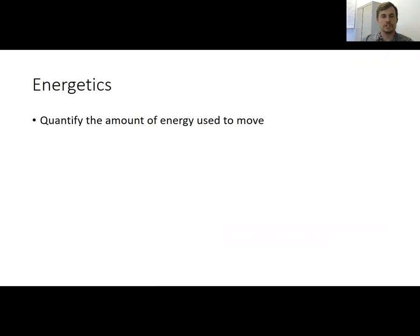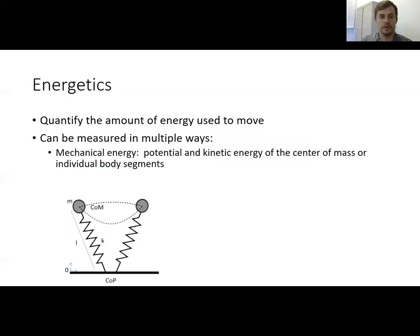So what do we mean by gait energetics? In energetic studies, we simply quantify the amount of energy that we use to move. This can be measured in multiple ways. First, we can measure the mechanical energy that someone is producing to move. This is where we often model the body as something very simple, like a spring with a point mass on top. By using this simplification, we can make assumptions that allow us to calculate the potential and kinetic energy of the center of mass on individual body segments.